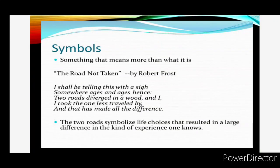The poet has also used symbols in this poem — something that means more than what it is, to convey an idea. 'I shall be telling this with a sigh, somewhere ages and ages hence, two roads diverged in a wood, and I — I took the one less traveled by, and that has made all the difference.' So the two roads symbolize life choices that resulted in a large difference in the kind of experience one knows. To convey this idea, the poet has used these two roads as symbols.